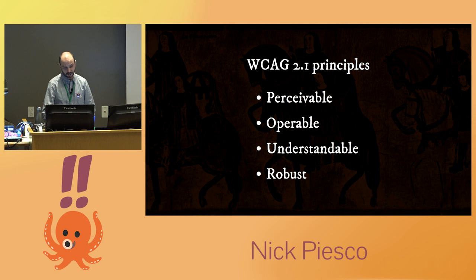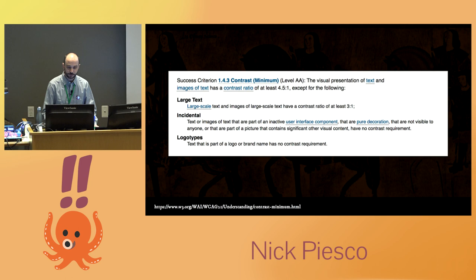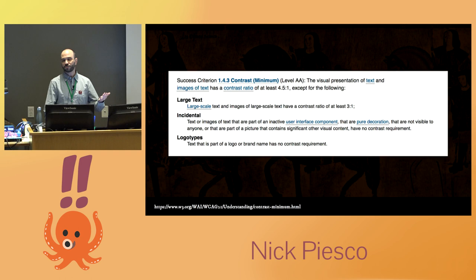We're going to focus on one little tiny part of the first one, perceivable — specifically color contrast. So level AA, kind of mid-range accessibility, you want to hit a contrast ratio of at least 4.5 to 1, except for large text, which you have to hit a ratio of 3 to 1. By the way, this is text on an image — that's not accessible, don't do this in your product.